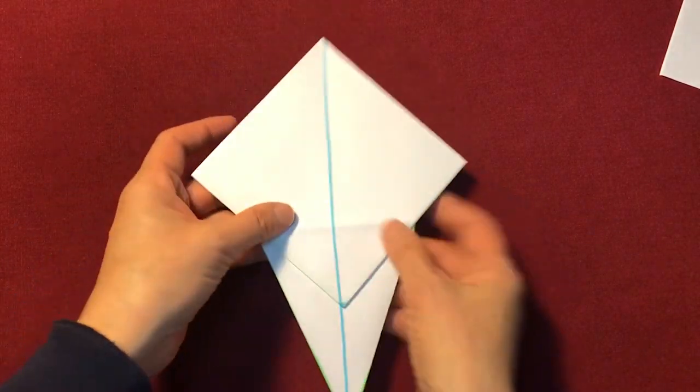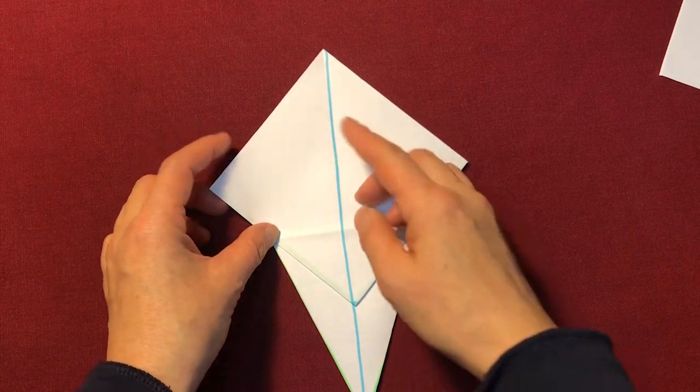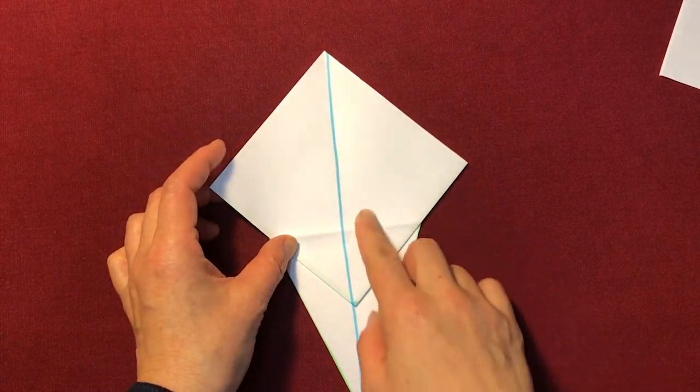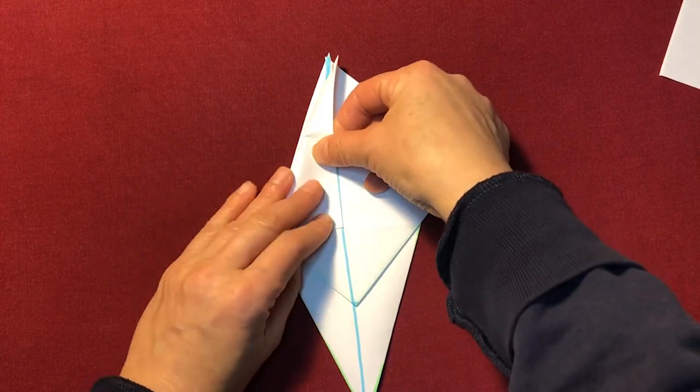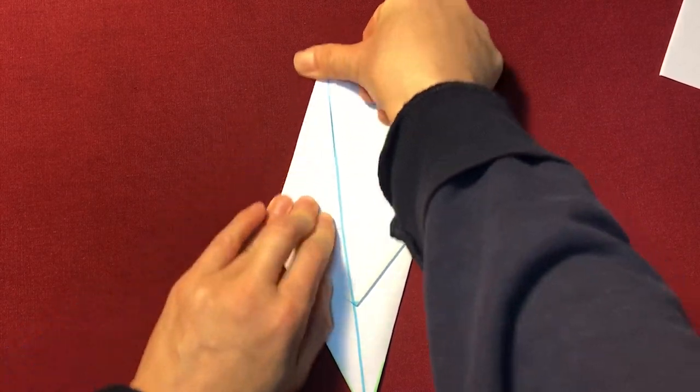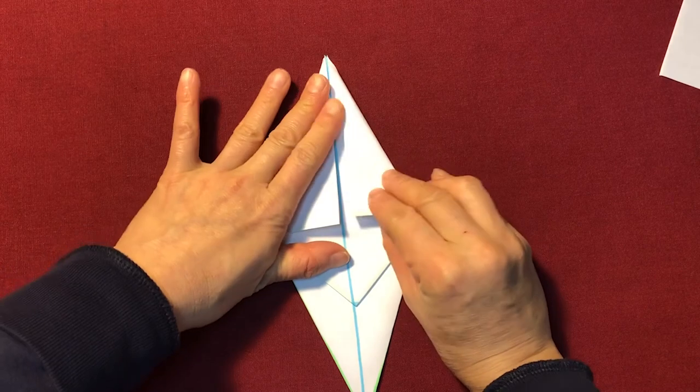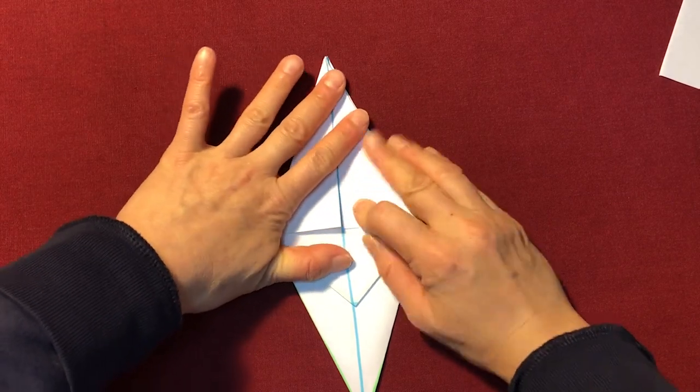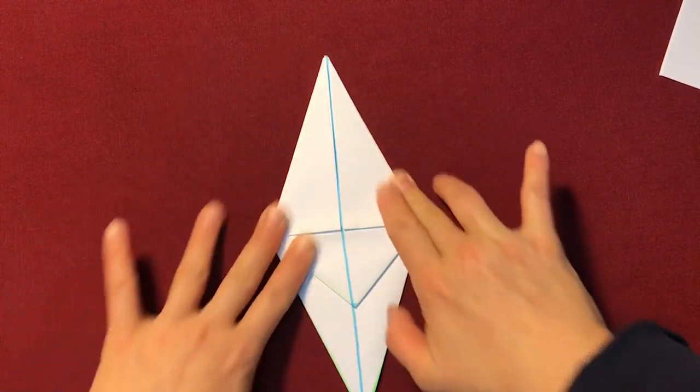Flip to the other side. It's the same. This edge is going to go on top of the blue line in the center. The other side. Same. This way.